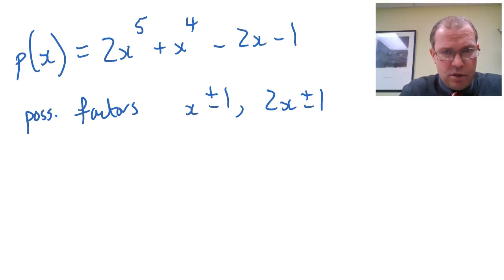Now, if we were to factor this using the factor theorem, it would take us a long time. The possible factors, there are four of them, are listed there: x plus or minus 1, or 2x plus or minus 1.